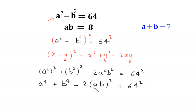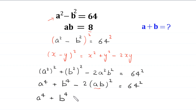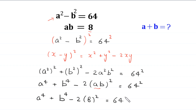Now in this equation we replace ab with its value. Since ab equals 8, this becomes a to the power 4 plus b to the power 4 minus 2 times 8 squared is equal to 64 squared.